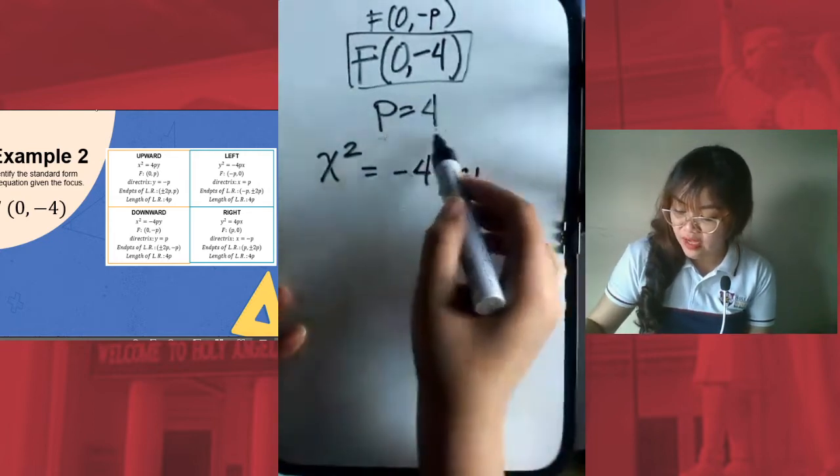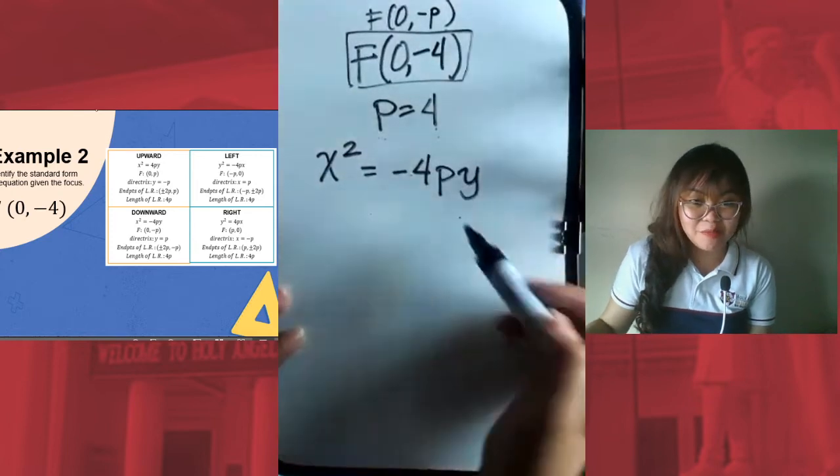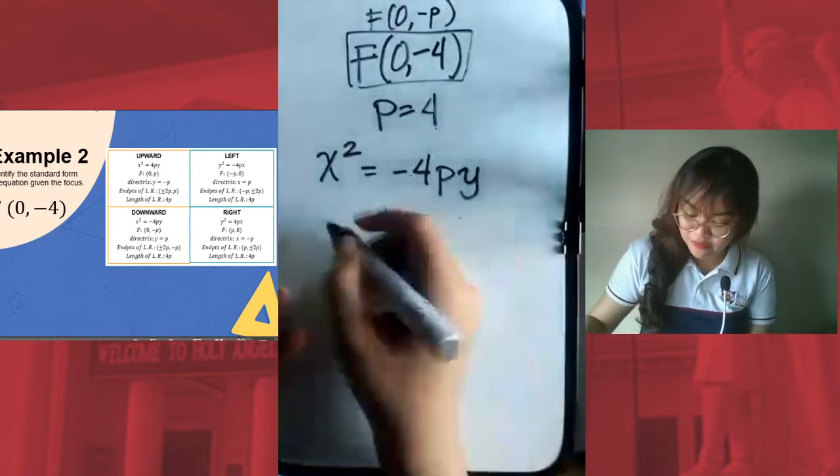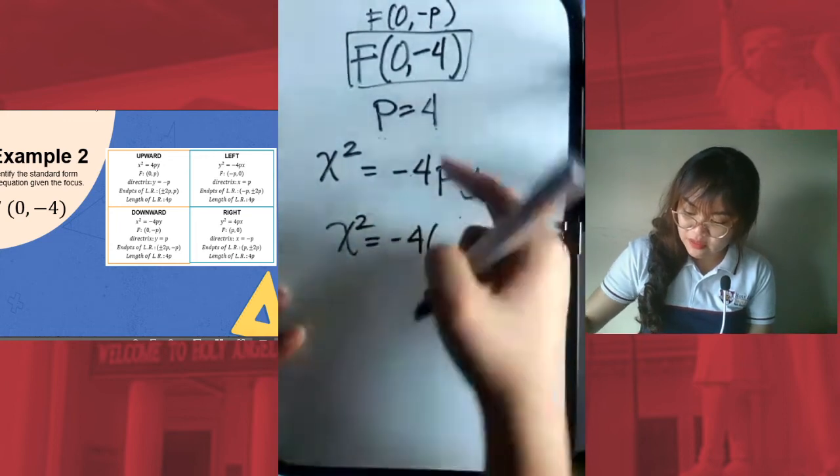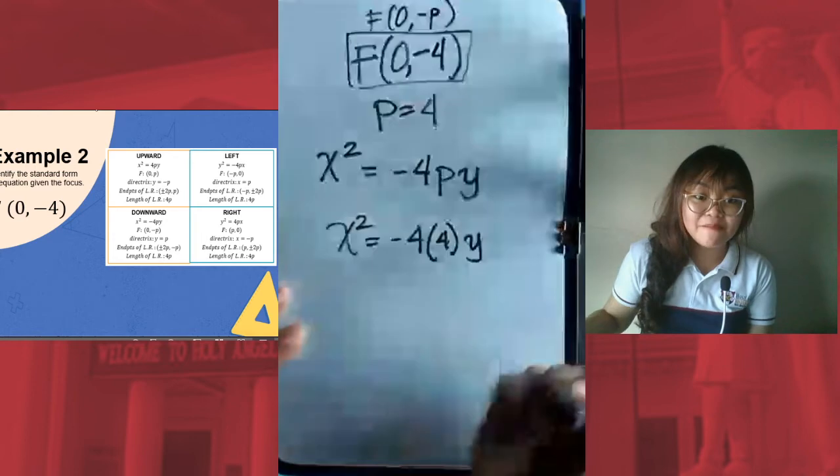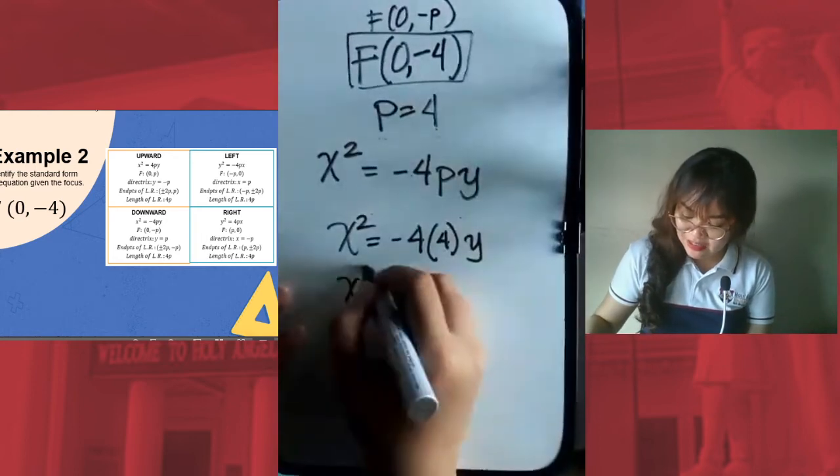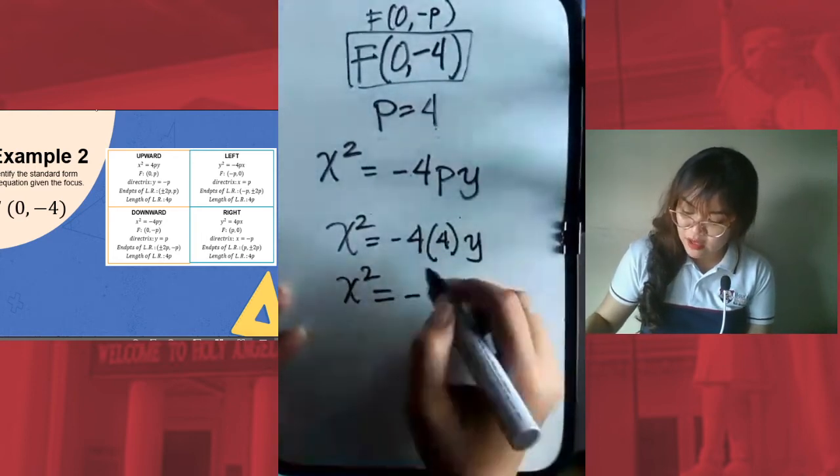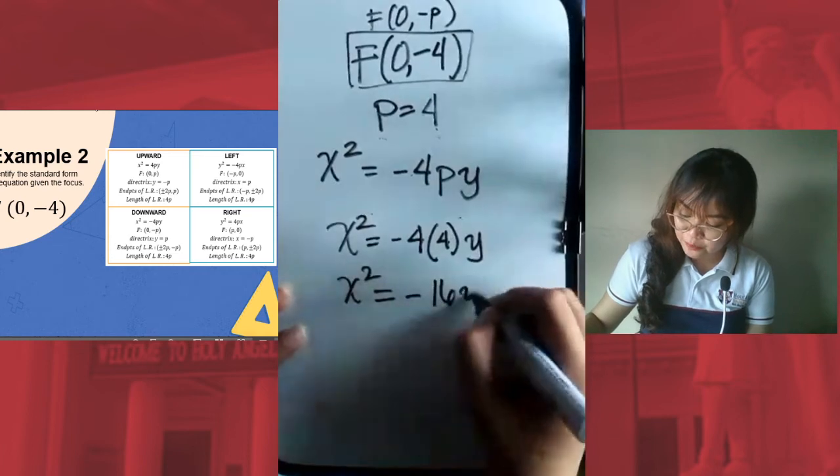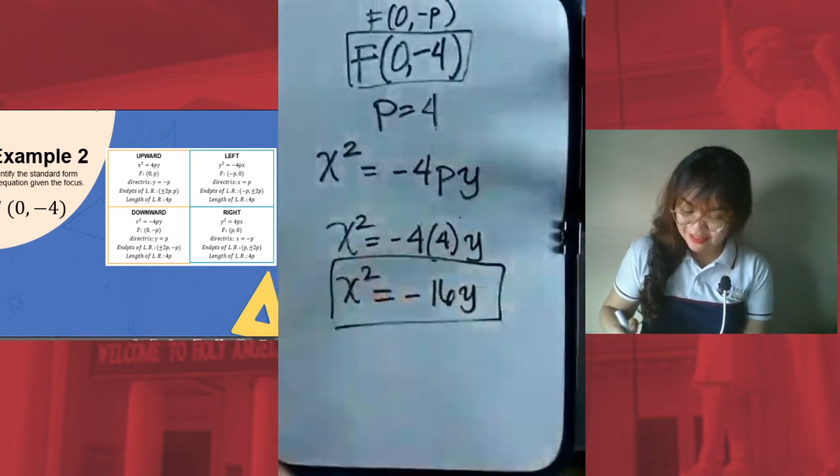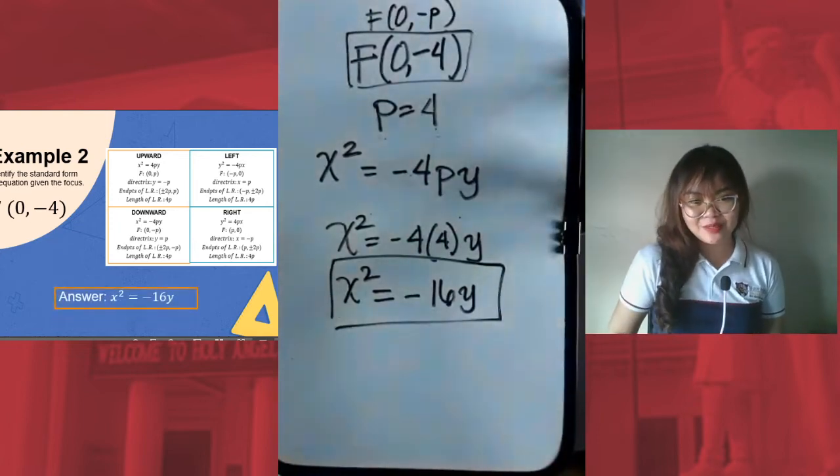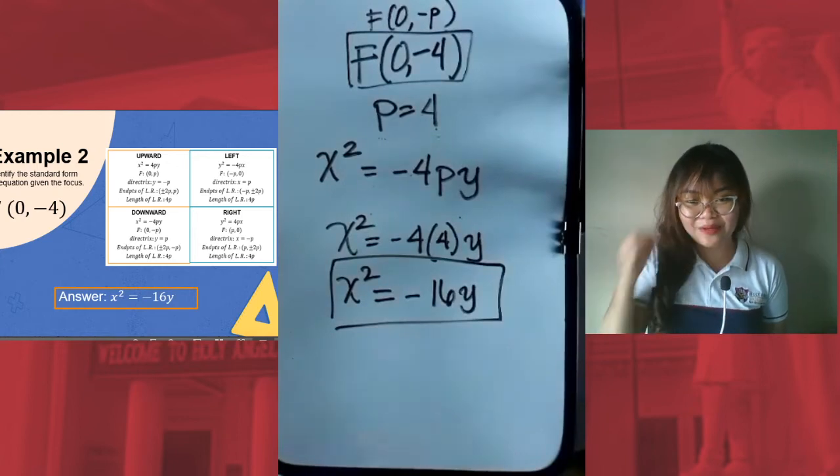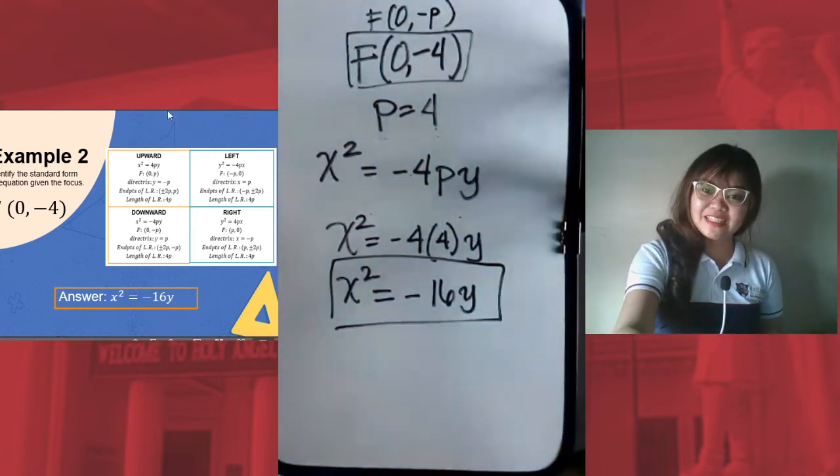Now that we have the value for p, we substitute here to get the standard form of equation. x² = -4 times the value of p, which is 4y. Simplify that. x² = -4 times 4 is -16y. This is your answer. Let's check if we have the same answer. x² = -16y. Let's move on to the next example.